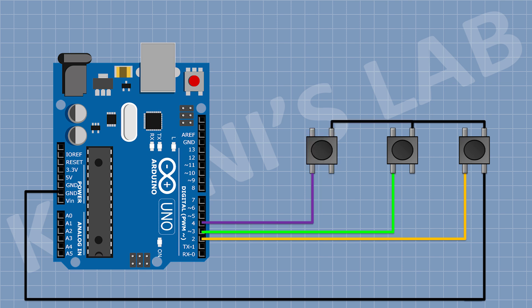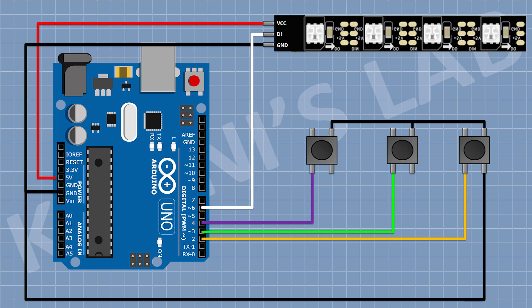Now connect another push button and connect its one pin to pin D4 of Arduino and its other pin to ground. This button is for changing the effect. Then connect the addressable LED strip and connect its VCC pin to the 5V pin of Arduino, its ground pin to ground, and its data pin to pin D6 of Arduino. So those were the connections.